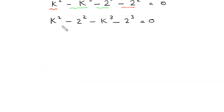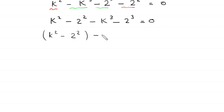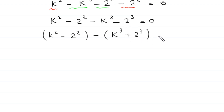Now we make a group of these two terms k squared minus 2 squared, and we use parenthesis to make this a group. We take a negative sign outside the parenthesis, so this negative k cubed will become positive k cubed, and this negative 2 cubed will become plus 2 cubed, is equal to zero.